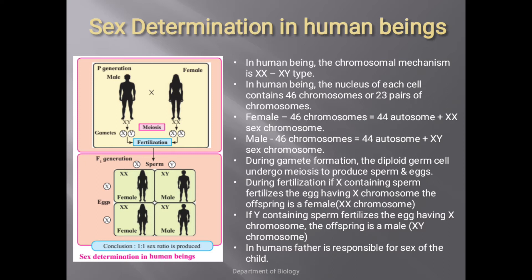In females, the 46 chromosomes consist of 44 autosomes, which determine body characters, and one pair of XX sex chromosomes. Whereas in males, out of 46 chromosomes, 44 are autosomes and XY is the sex chromosome. During gamete formation in the male, the diploid germ cell in the testes undergoes spermatogenesis.